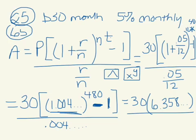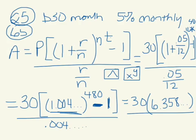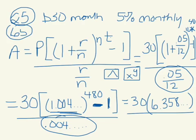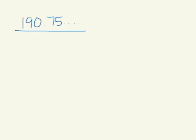So then you should have 190.75 something something something, and then you divide by what was in that denominator, that 0.05 divided by 12. So when you put that in a calculator, it ends up being...